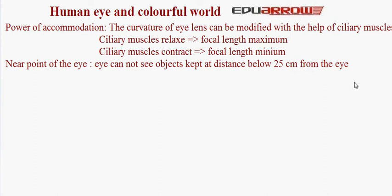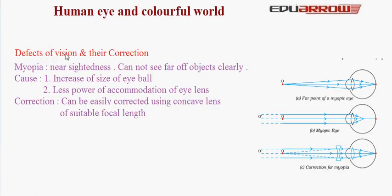Let us now discuss the defects of vision and their correction. The very first defect of the eye is myopia. It is the condition where nearby objects can be seen clearly but far-off objects cannot be seen clearly. The image of objects at infinity is not formed on the retina. The cause of this disease is the increase in the size of the eyeball — as the size increases, images of distant objects are formed in front of the retina. That means the far point of a myopic eye is less than infinity.